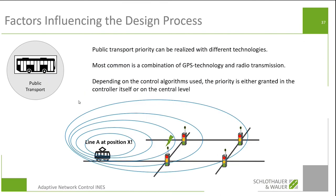Public transport priority — how it usually works. Public transport priority can be realized with different technologies; the most common is a combination of GPS technology and radio transmission. Depending on the position of the vehicle on its trajectory, it sends a radio message saying, for example, 'I'm vehicle A on line X at position Y.' This message is either received by an individual controller, which then prioritizes that vehicle, or received by the central, which is responsible for prioritization of the individual vehicle. The underlying principle is always that the vehicle gives its position at one point on its trajectory — and that is all the information you're getting.